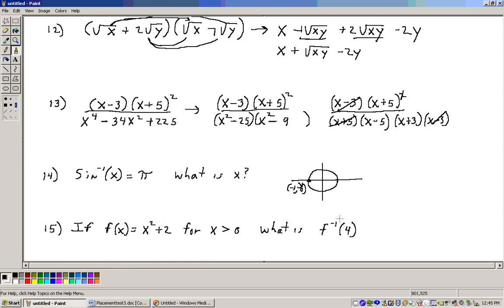In other words, this is the y value of the original function. So just 4 equals x squared plus 2. Subtract 2 from both sides, you get 2 equals x squared. Take the square root of both sides, and you get x equals the square root of 2. And that's answer 15.